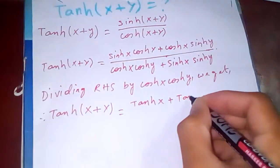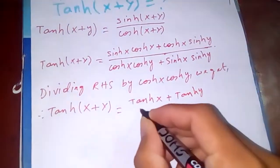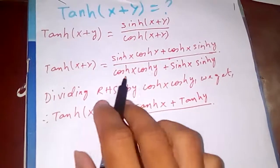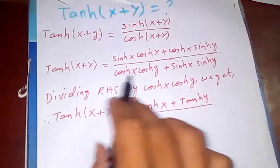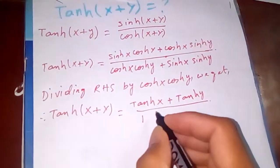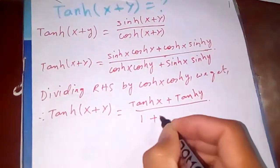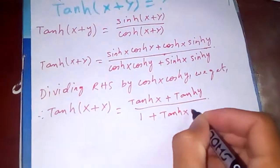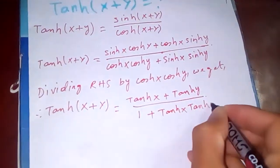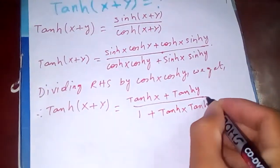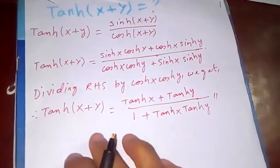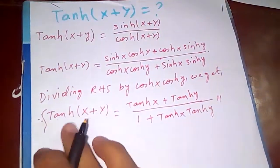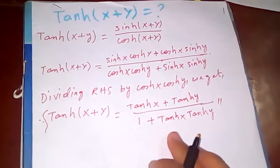Similarly, cosh(x) and cosh(x) cancel out, so we are left with tanh(y). Dividing both sides by cosh(x)·cosh(y) completes the expression. This is our proof of tanh(x+y).